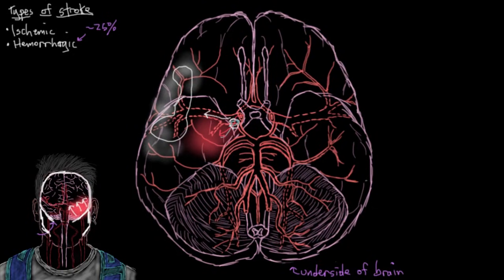And it gets even worse. You can see all this blood leaking out onto the underside surface of the brain. It turns out that blood contacting the outside of blood vessels irritates those blood vessels. So when these vessels feel all this blood, they start to get irritated and begin to clamp down a bit.